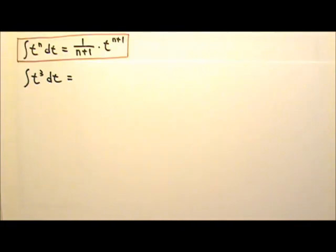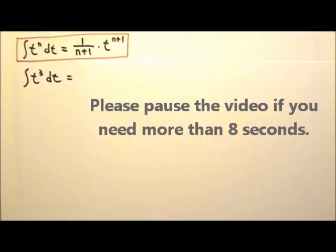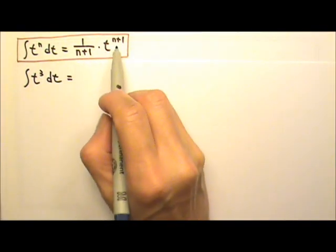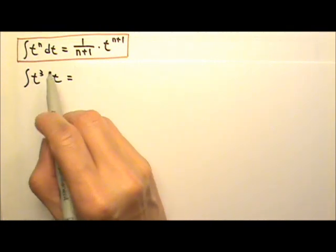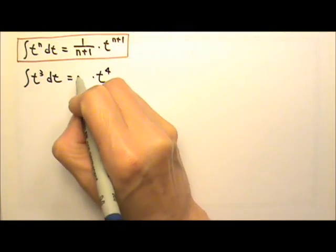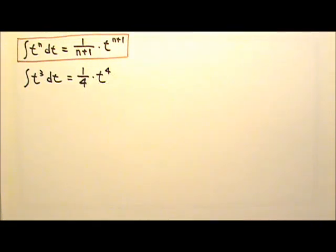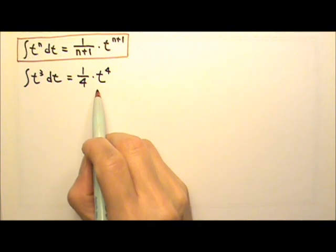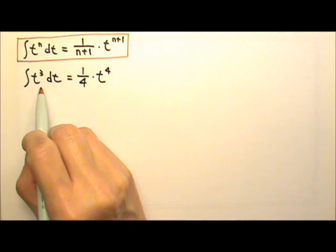Now let's try a few examples. Let's start with the integral of t to the third dt. According to the formula, we have to gain one degree of power, so we go from t to the third to t to the fourth. And then we have to remember to multiply by one over this new exponent, so one-fourth. Because integration is the reverse operation of derivative, if we take the derivative of this, we should get t to the third.